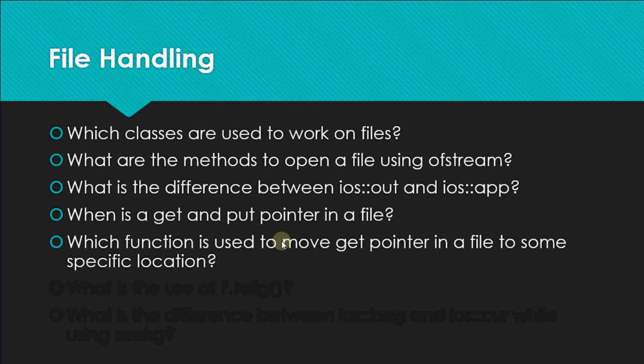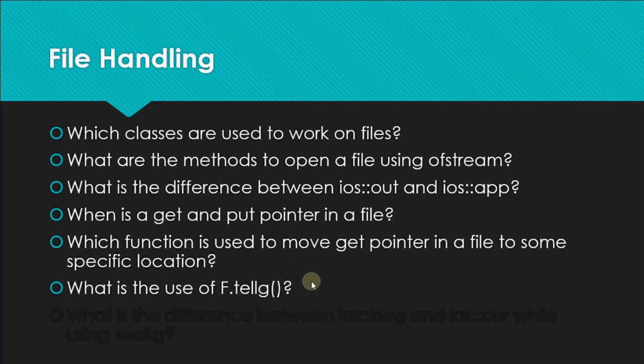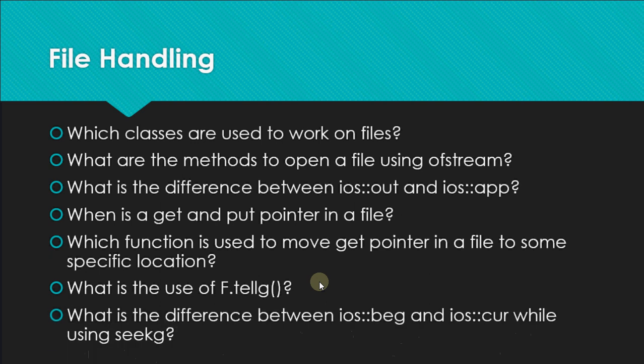Which function is used to move the get pointer to a specific location? The function is seekg(). You write fileObject.seekg() and provide the byte number where you want to move the get pointer. The function tellg() tells you where the get pointer currently is — it returns the current byte number. Similarly, tellp() gives the position of the put pointer.